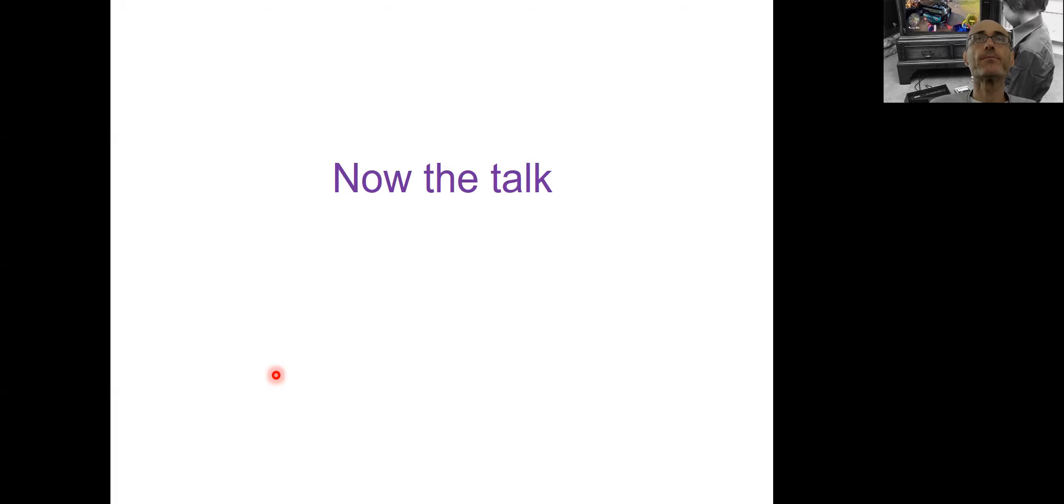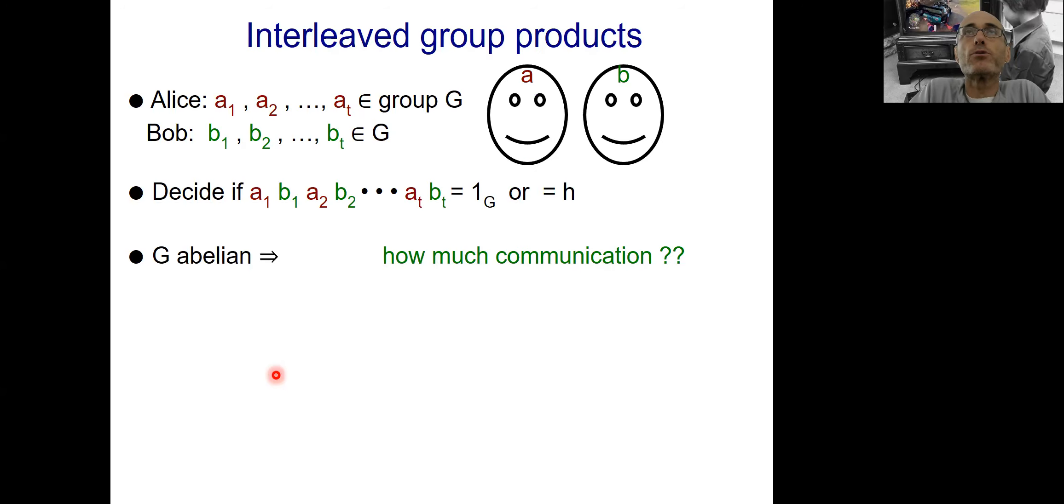And now the talk. This talk is about communication complexity in some way, so let's start with the basic two-party setting. There is Alice and Bob, and Alice receives as input a couple of elements a1, a2 dot dot aT from some group G. And Bob also receives a couple of elements b1, b2 dot dot bT from the same group G. And they want to decide if the interleaved group product, that is a1 times b1 times a2 times b2, dot dot all the way to aT times bT, is equal to 1, the identity element in the group, or some other fixed element in the group.